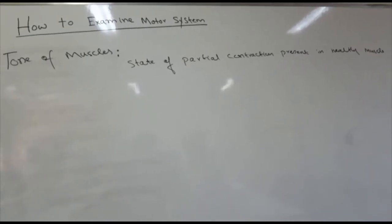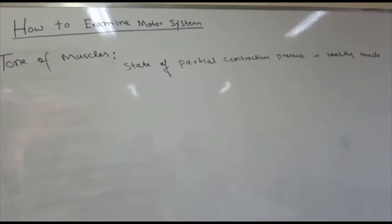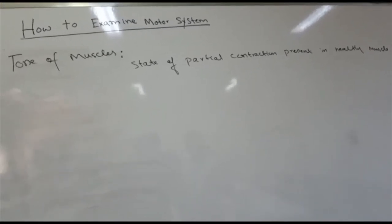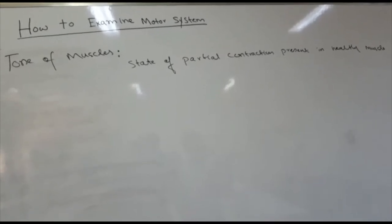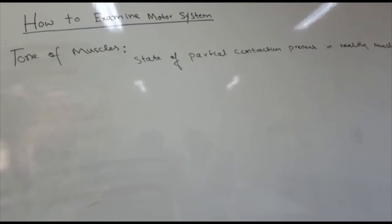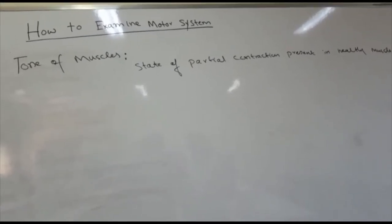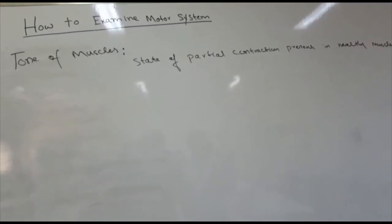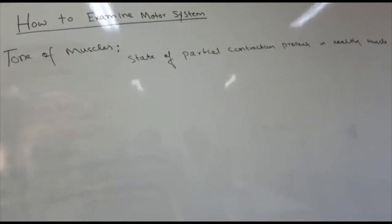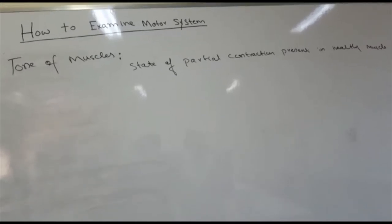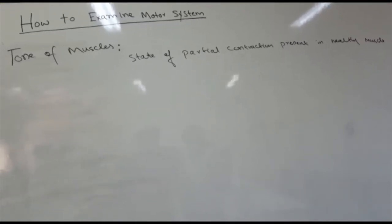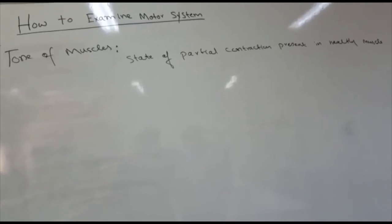Tone is the state of partial contraction present in healthy muscles — it is the resistance felt when a joint is moved passively. Ask the patient to let his wrist and arm go floppy, then flex and extend his wrist passively and feel for any abnormality of tone. Compare on both sides and repeat at every joint of the upper and lower limb. Basically, tone is controlled by the corticospinal and extrapyramidal tracts.